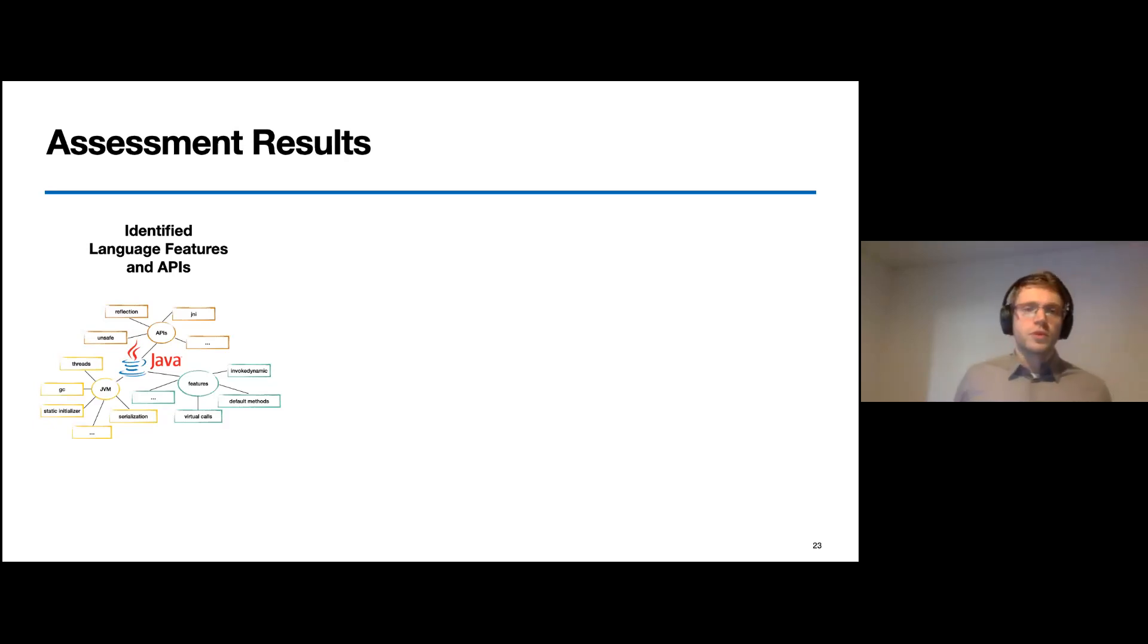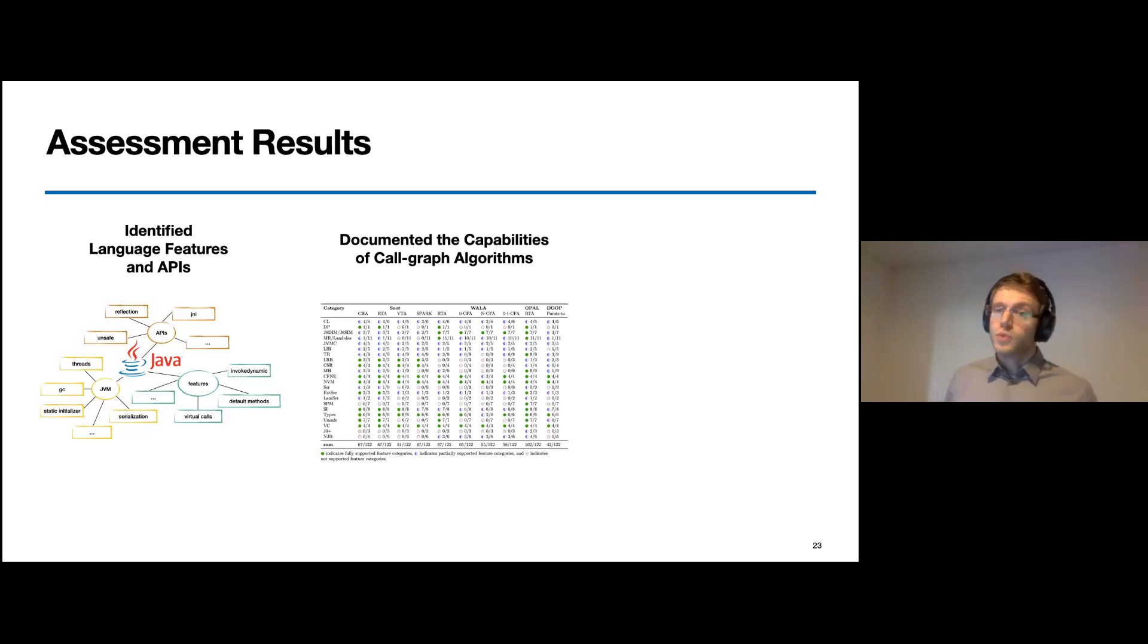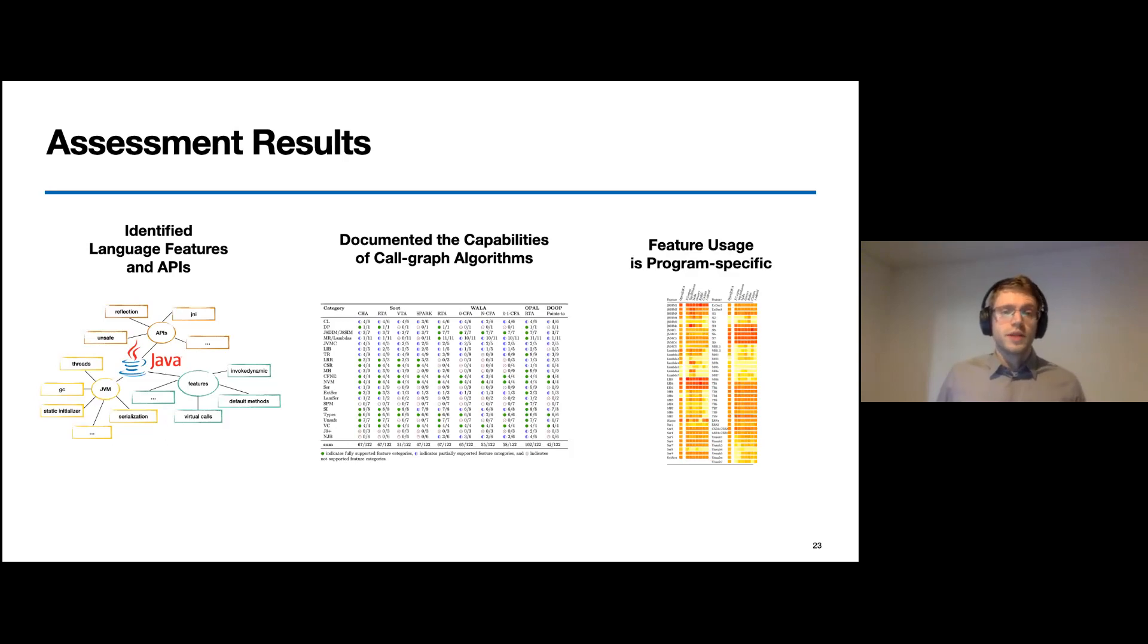Let's recap what we have found so far. We identified language features and APIs that lead to unsoundness, and while documenting the capability of call graph construction algorithms, we realized that only roughly half of the features are supported. However, not all features are required in every program. So we kind of face the following dilemma. Even if we could cover all the features in our call graph construction, it wouldn't really make sense. Because as we learned at the beginning of the talk, these features are still evolving, and there will be new features, APIs change, and therefore they are a moving target. Additionally, as they are not required in every program, we don't need them for every program.